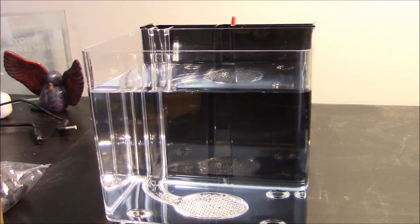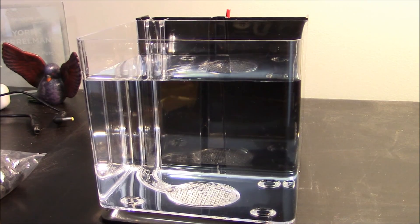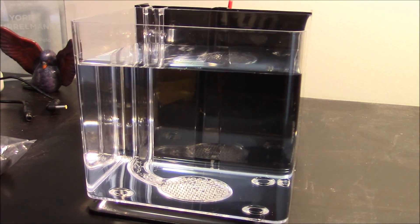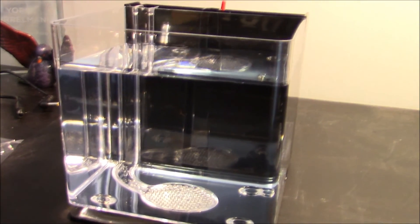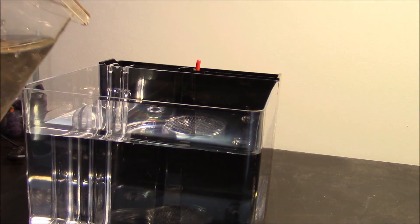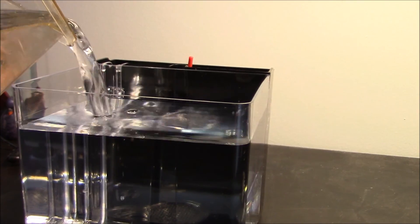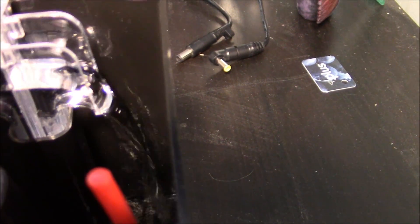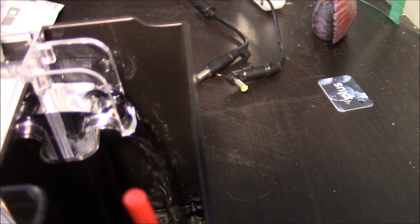Alright, so now the aquarium's filled up, filled up with water all the way to the top, and let's say I want to do a water change. It's very simple. All I've got to do is take my dechlorinated tap water and pour it in, and as I'm pouring this water in, the dirty water from the bottom of the aquarium pours out the back.